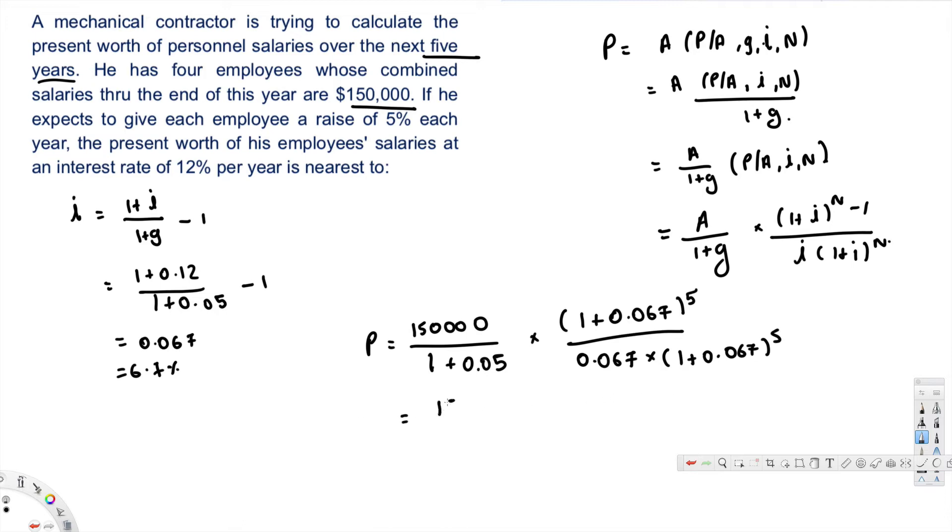And if you simplify this, it's going to be $150,000 times 4.133 divided by 1.05, and that gives us $591,008.